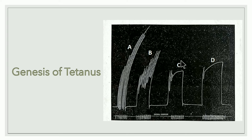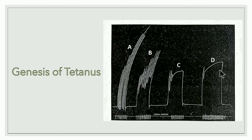D is complete tetanus — high frequency of 40 per second is applied. The high frequency does not allow the muscle to relax and it goes into continuous spasm for as long as the stimulus is given. Summary: A is treppe/staircase phenomenon, B is clonus, C is incomplete tetanus, and D is complete tetanus.